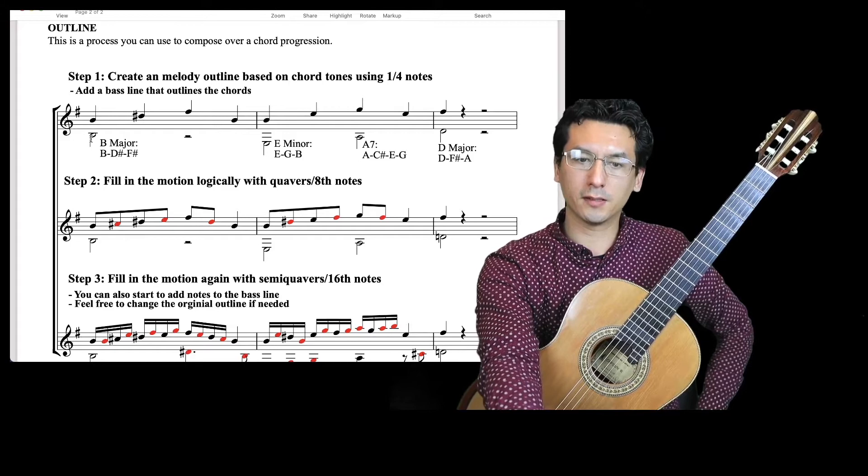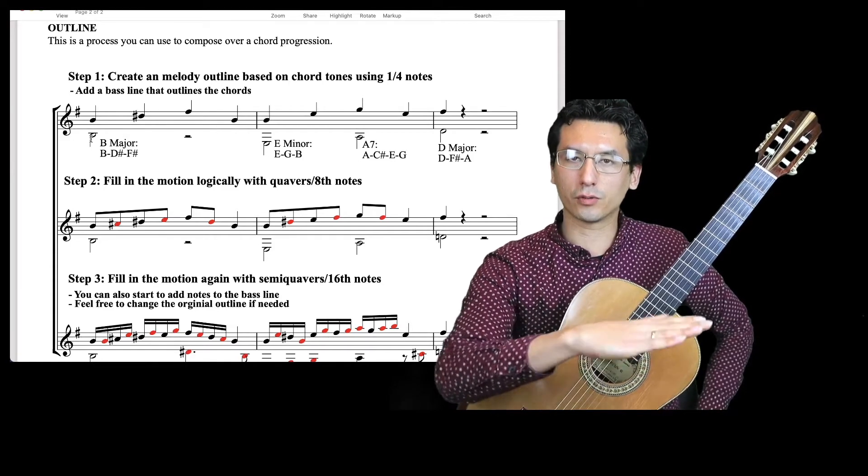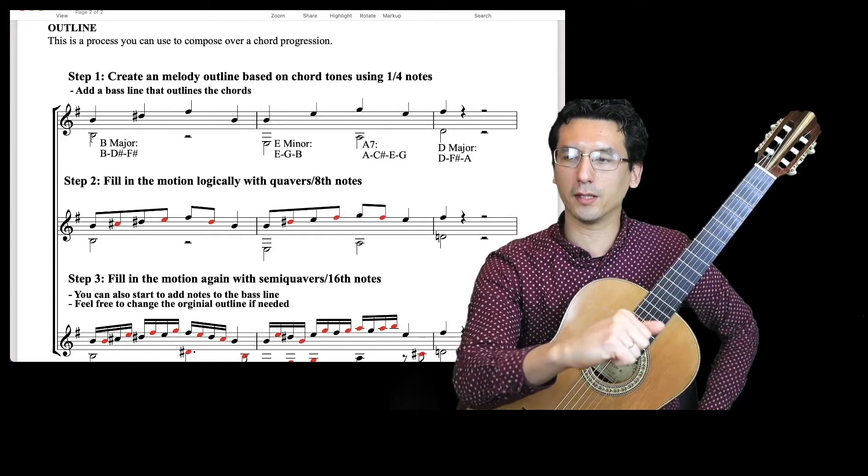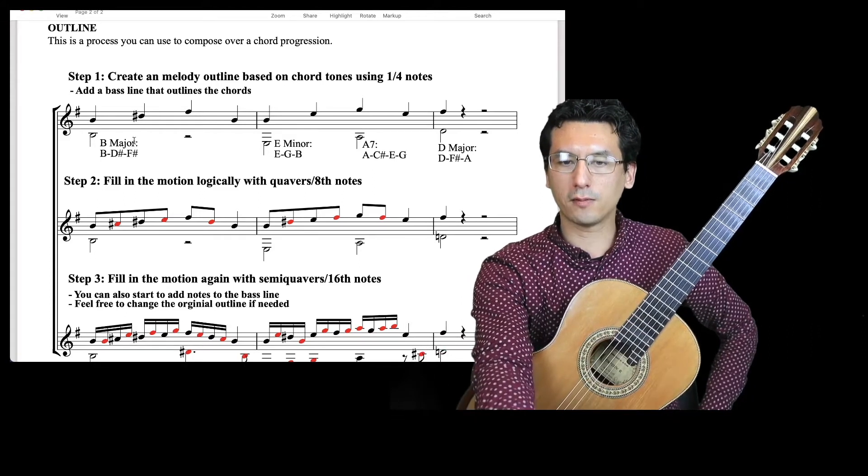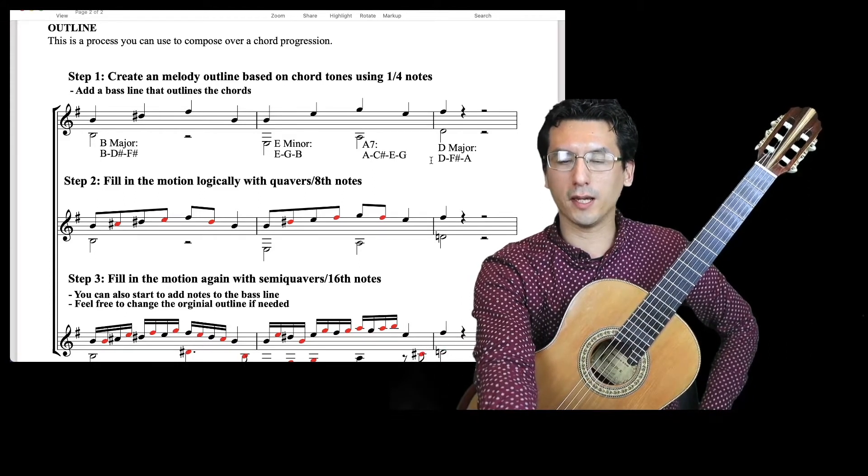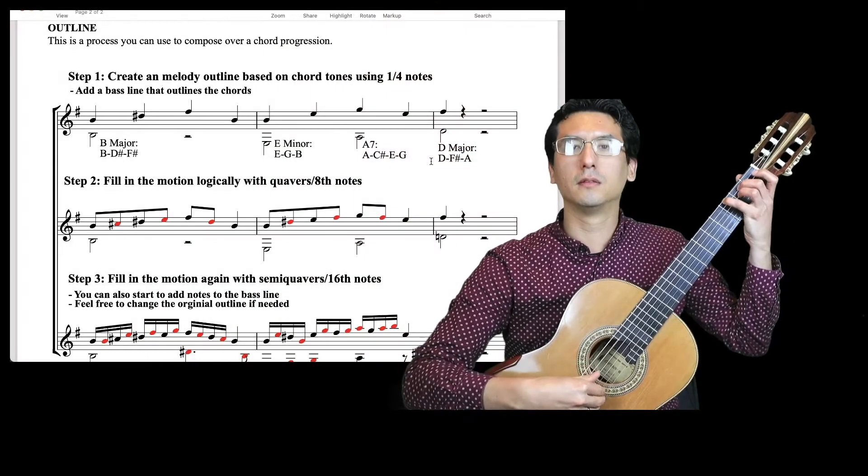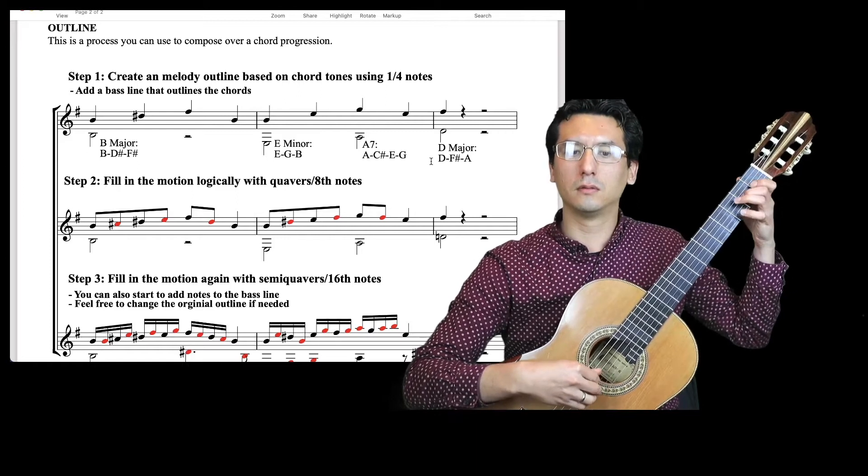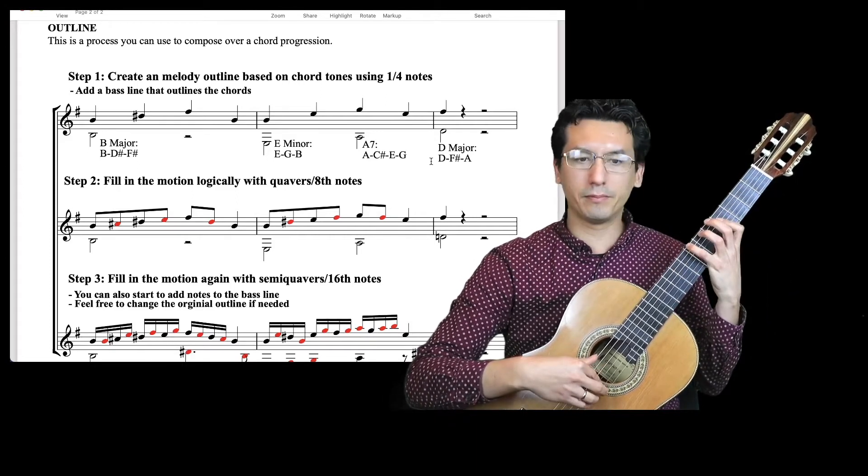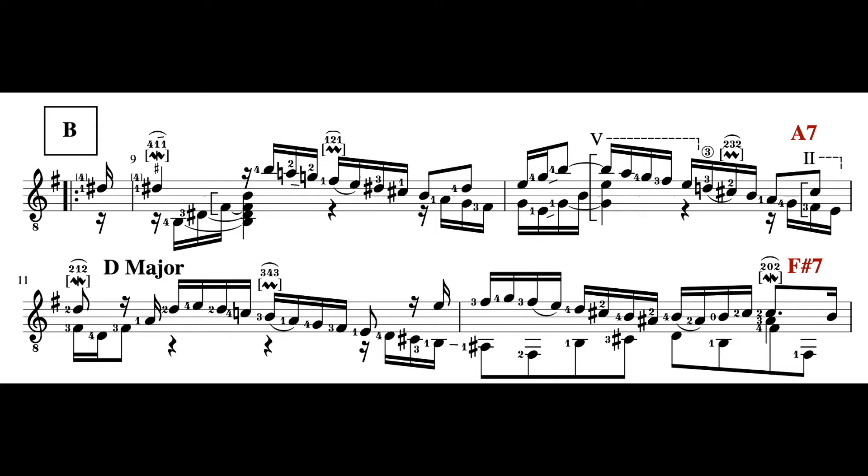And then you can add a bass line to that as well, which is also further supporting the harmony that you're choosing. Now these four chords here are actually taken from a little section of Bach's Allemand in E minor, from the B section.